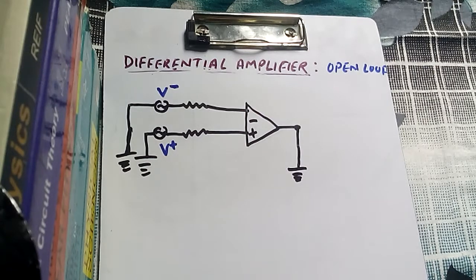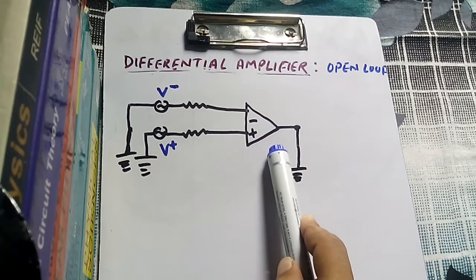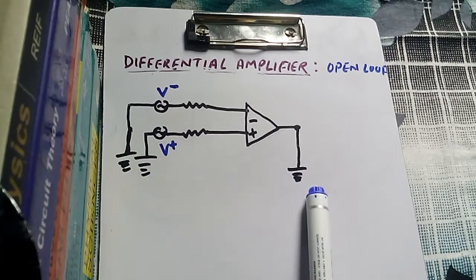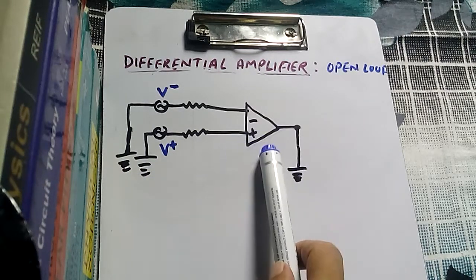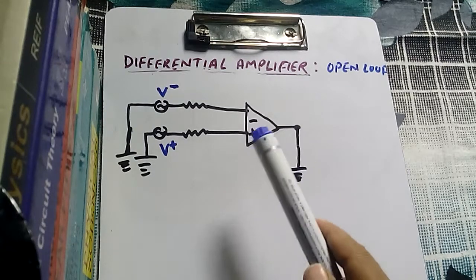Hey friends, this is Vidhan, welcome to my channel. Today we will see differential amplifier — first we will see the case with open loop and then with feedback. We will use an operational amplifier to make a circuit of a differential amplifier. There is another way to make a differential amplifier by using two transistors, and those two transistors should be well matched. So basically there are two ways to make a differential amplifier: either by using an operational amplifier or by using two transistors.